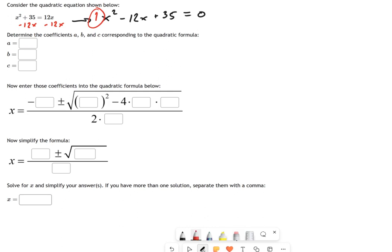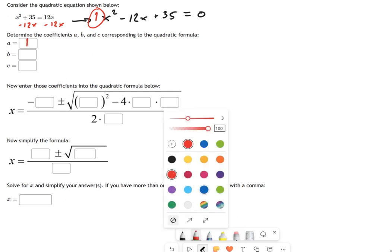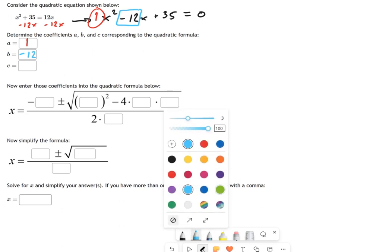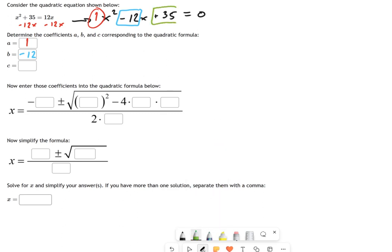And my b value I can see next in line—that's this negative 12 bit. So that's b. And my last number in the lineup is c, and that's 35.